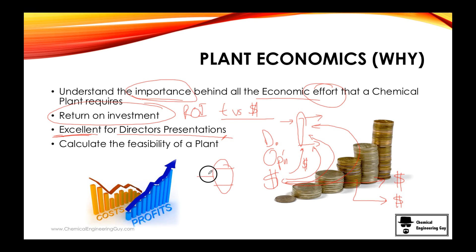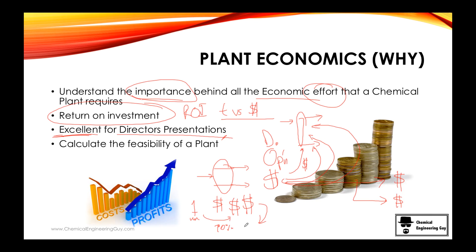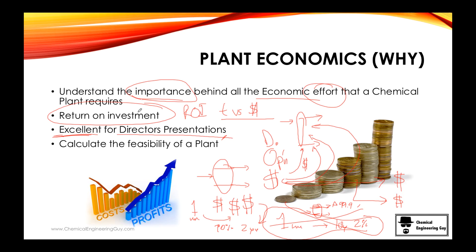This is what directors and managers care about most — they don't care about you designing the perfect distillation column; they want to know how much it costs and when they'll get their money back. If you say it's 1 million and you'll get 10x returns after year two, that's a great deal. But if your fancy column achieves 99.999% separation yet takes 10 years for a 2% return, they won't invest. Economic feasibility determines whether a plant is truly possible, or just a dream.